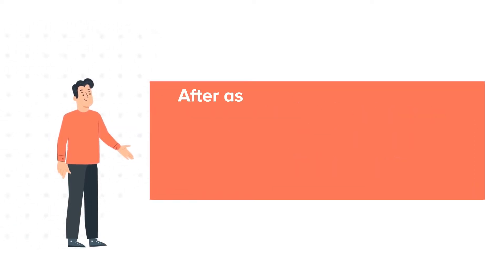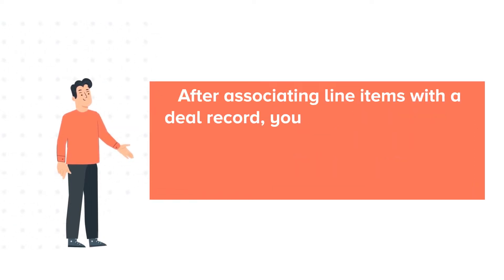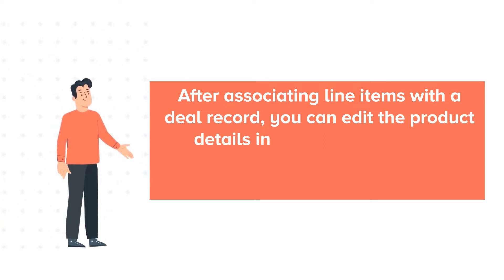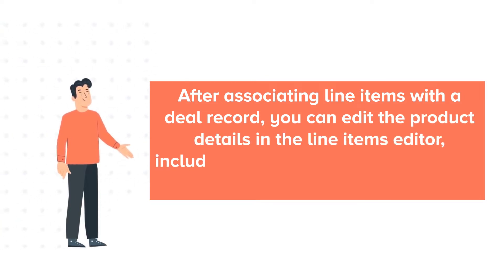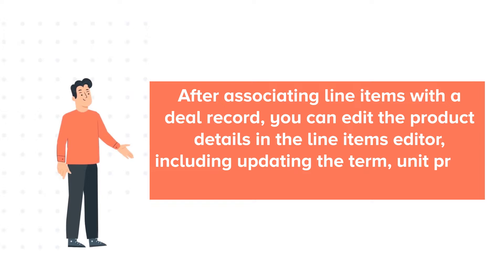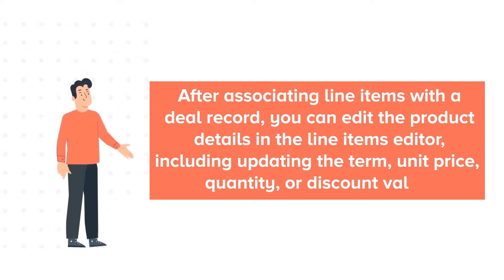After associating line items with the deal record, you can edit the product details in the line items editor, including updating the term, unit price, quantity, or discount value.